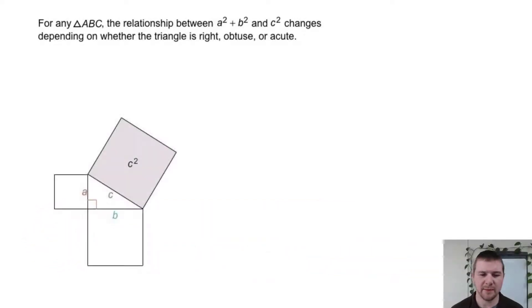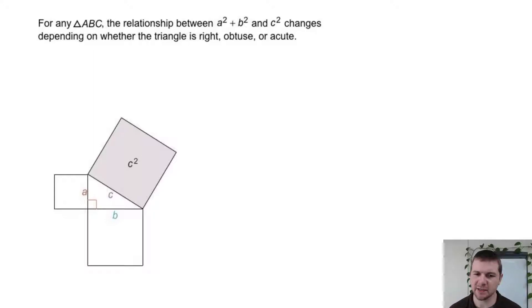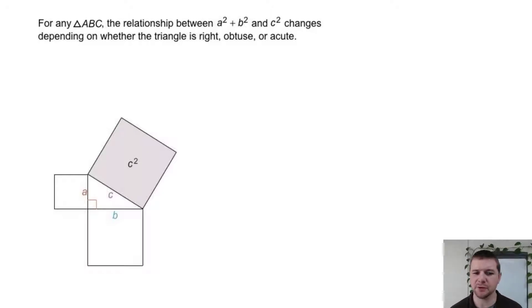For any triangle ABC, the relationship between the sum of A squared and B squared and C squared changes depending on whether the triangle is right, obtuse, or acute.